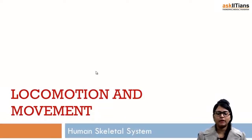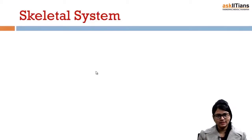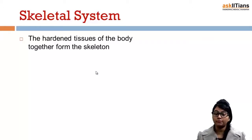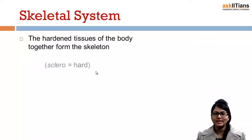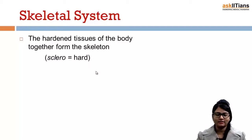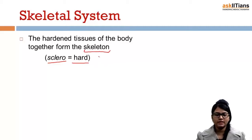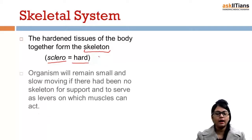We are going to discuss about the human skeletal system. The hardened tissues of the body together form the skeleton. The term skeleton has evolved from 'sclero' — sclero means hard.